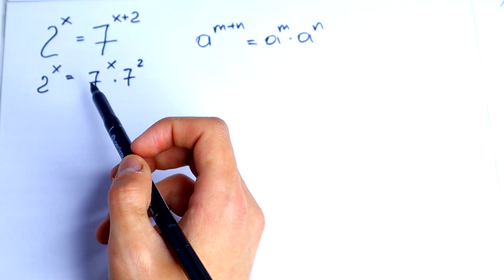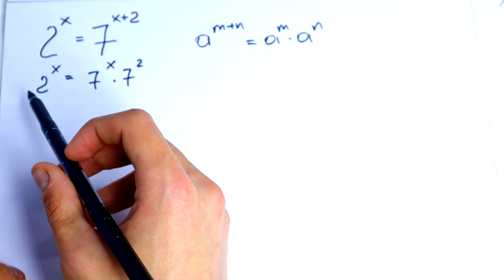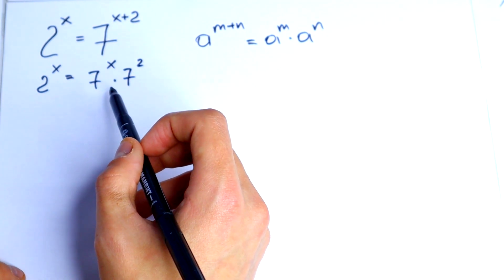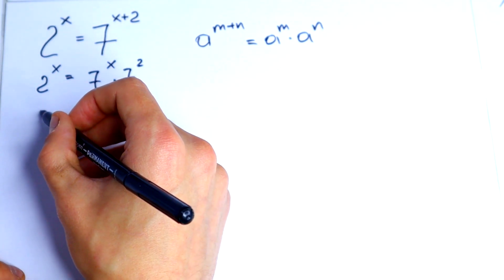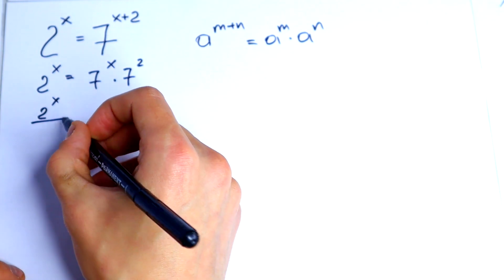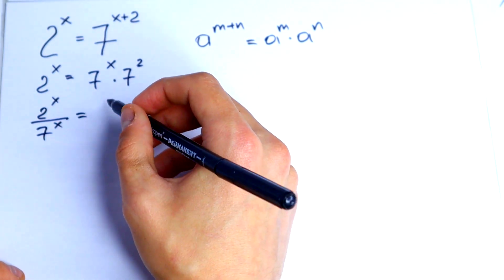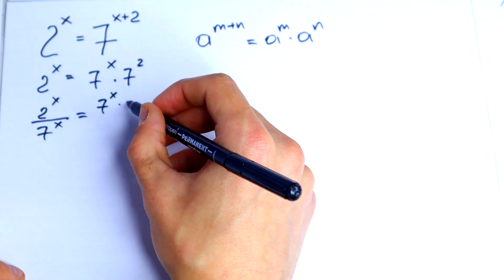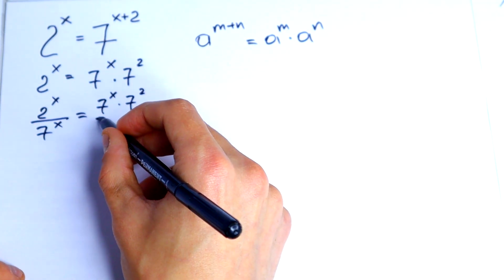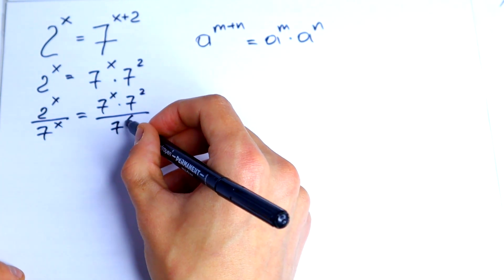We have different bases and I will suggest to divide both sides by 7 to the power x. 2 to the power x over 7 to the power x equal to 7 to the power x times 7 square all over 7 to the power x.